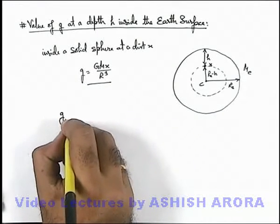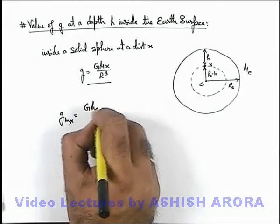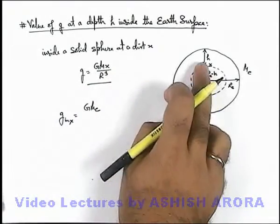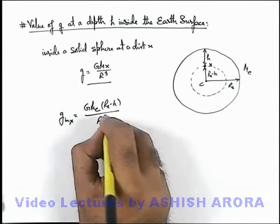So here g inside the earth at point x can be given as GMe, and the distance x from centre of earth we can write as Re minus h divided by Re cube.